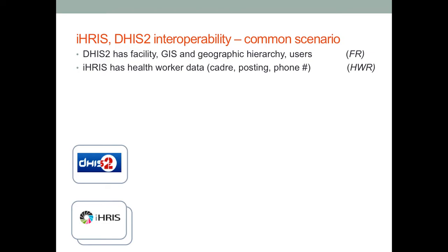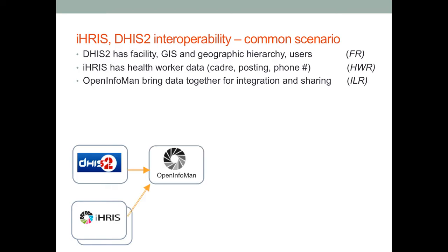What we would like to do is to bring all this information together into one source, and that's through an interlinked registry that pulls the facility information and the geographic hierarchy from DHIS-2, as well as the health worker information from IRIS or other similar HRIS systems, and interlinks and cross-references the two to present a common data model for both health worker and health facility information, as well as the deployment and services for those health workers.